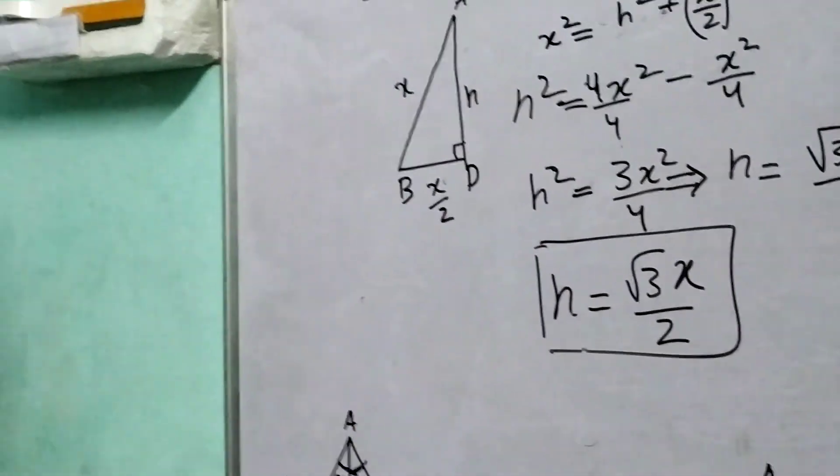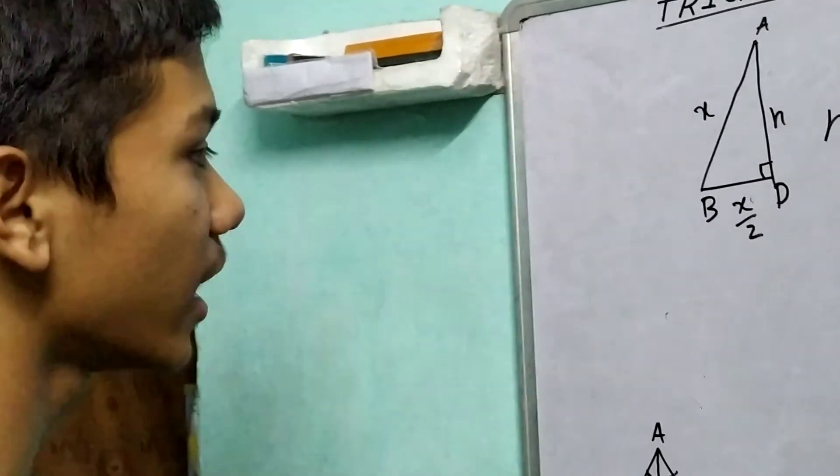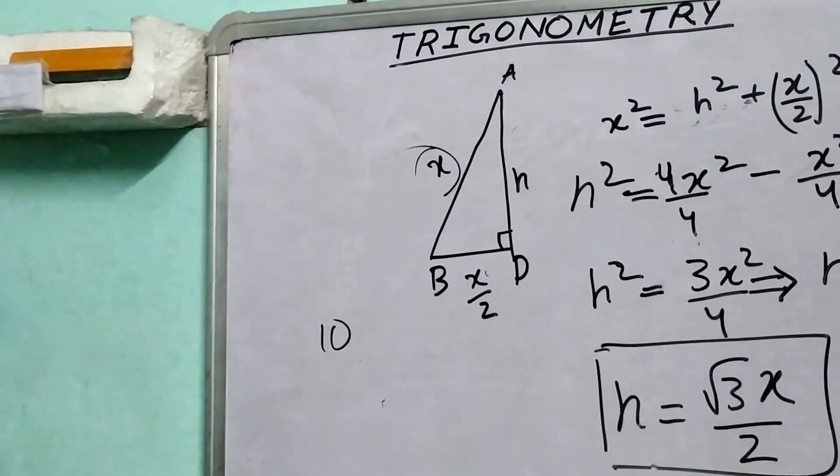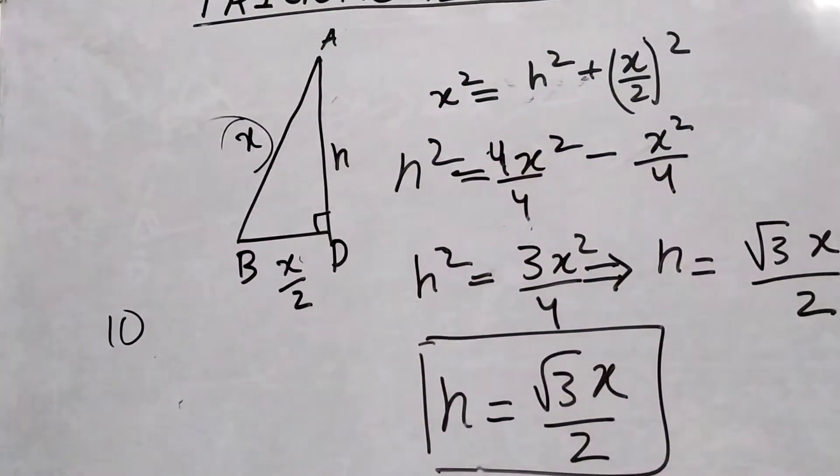Again, this is a general result for any equilateral triangle with side length x. So if you are given that x is, say, 10 cm, then you can put the value of x and find out the height.